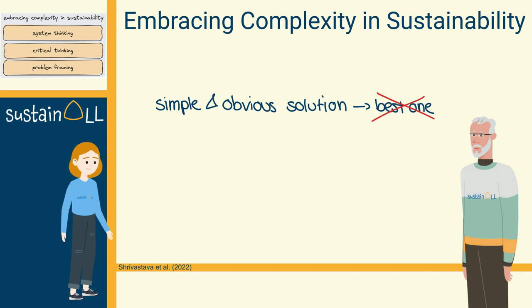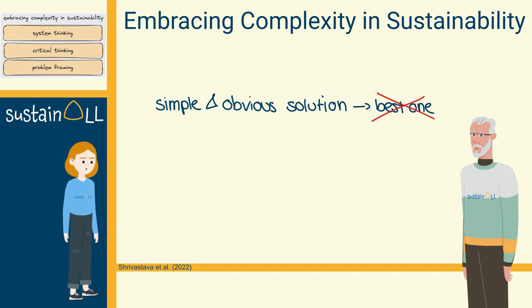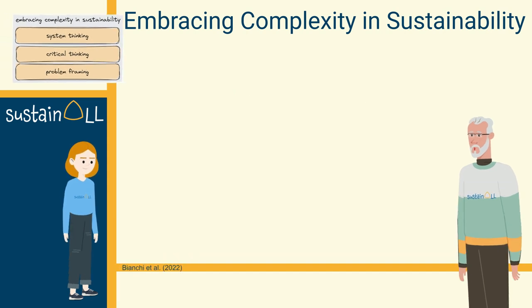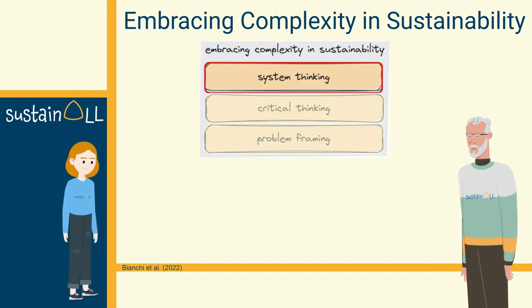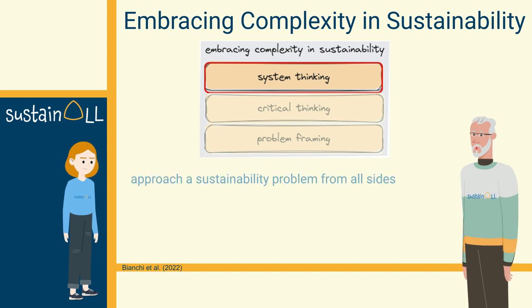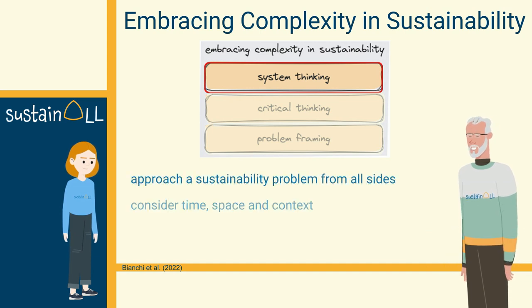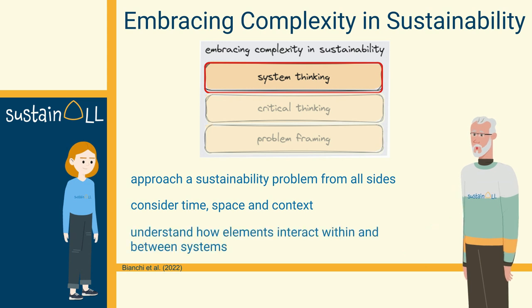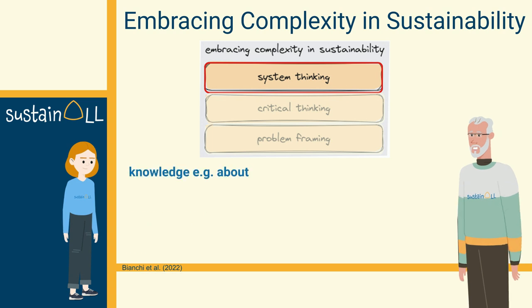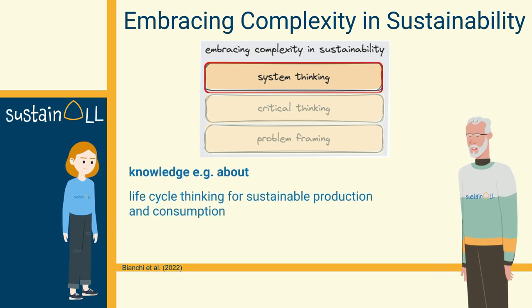That's exciting — I wouldn't have expected that. But what does that have to do with sustainability competence? This cucumber example is related to systems thinking. In the GreenComp model, this means approaching a sustainability problem from all sides, considering time, space, and context in order to understand how elements interact within and between systems. Hence, knowledge is needed about life cycle thinking and its relevance for sustainable production and consumption.